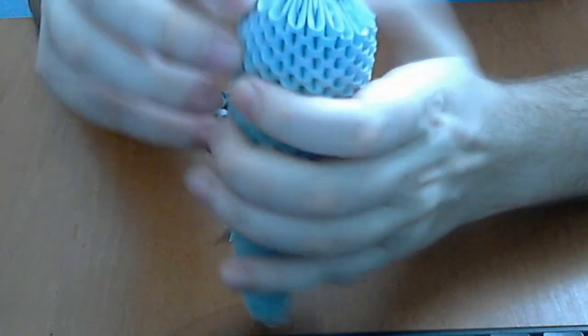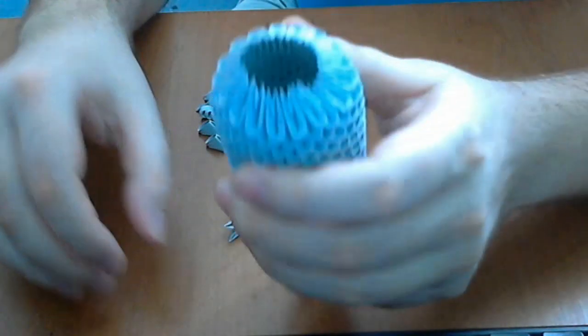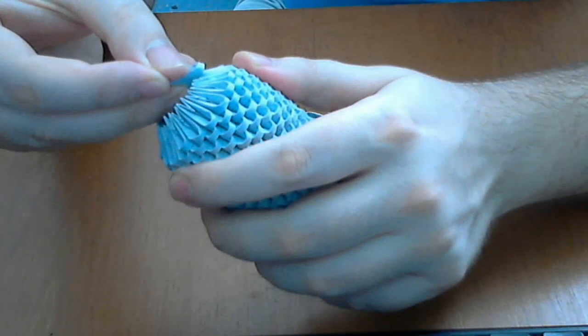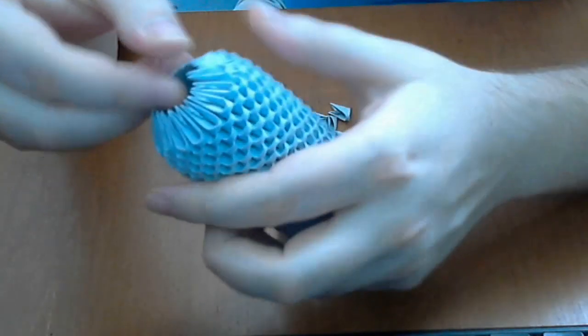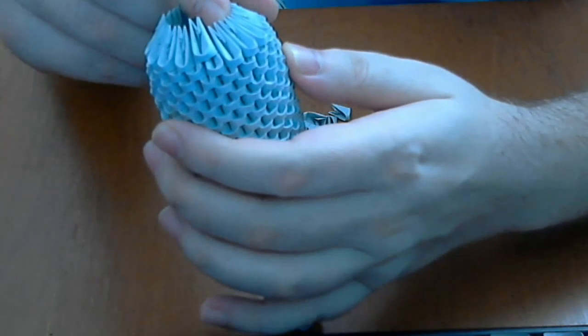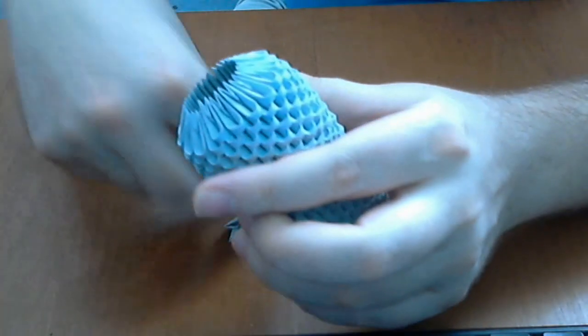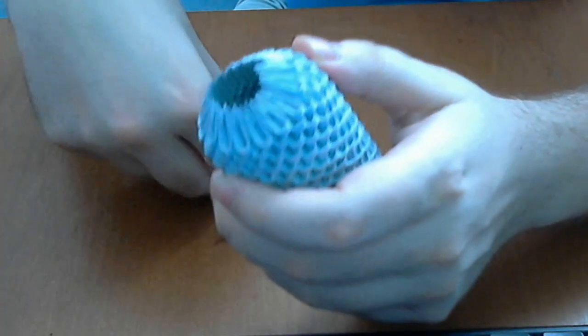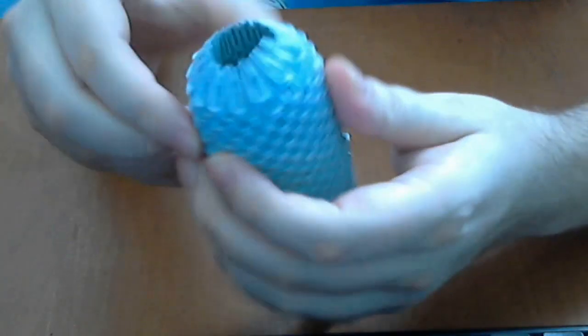In total 6. 1, 2, 3, 4, 5, 6. And next we will put 3 edges in one piece. Like this. And we will continue like this until we finish the row.